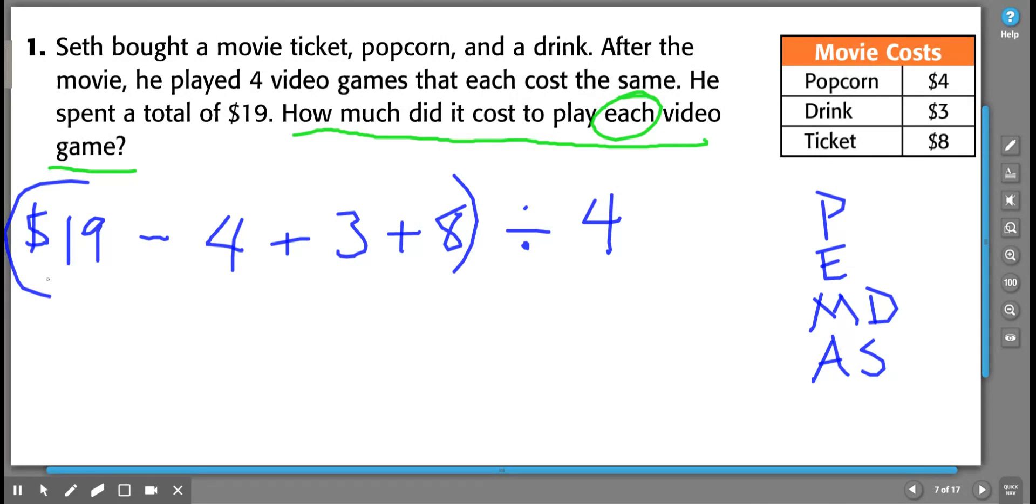So now I have, he started with $19, he took away four plus three plus eight. Oh, but that's not going to be right, is it? Because I'm not adding $3 and $8, I'm actually also subtracting those. So I could either change these to minus symbols, or I could put this inside parentheses and then actually make brackets on the outside. Either one of those will work.